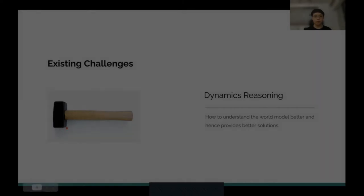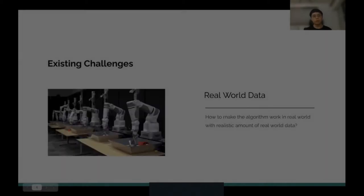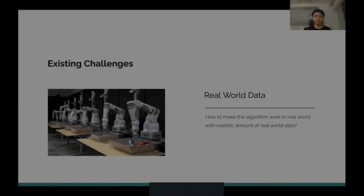If we don't understand the dynamics, we can never predict such consequences or the future states of the grasping effects. The next point is real-world data. How can we make the algorithm work in the real world with realistic amounts of data? Data collecting can be very expensive and time-consuming — hundreds of robot hours can be spent on it.